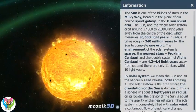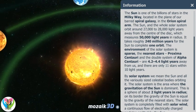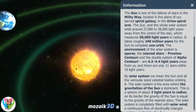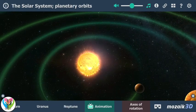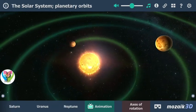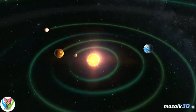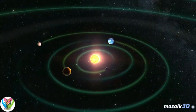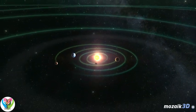The Sun is one of about 200 billion stars in the Milky Way, located in the plane of our barred spiral galaxy in the Orion spiral arm. The Sun and the whole solar system orbit around 27,000 to 28,000 light years away from the center of the disk, which measures 50,000 light years in radius. It takes roughly 240 million years for the Sun to complete one orbit.